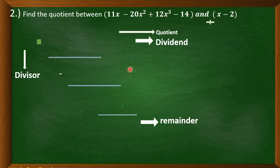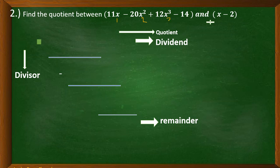Now let's have example number 2: find the quotient between the quantity 11x minus 20x squared plus 12x cubed minus 14 and the quantity x minus 2. We will check first if the dividend is already in standard form and if there are no missing terms. The first term has a degree of 1, the second has a degree of 2, the third has a degree of 3, and the last term has a degree of 0. So the terms are not yet arranged in descending order and we need to rearrange them.